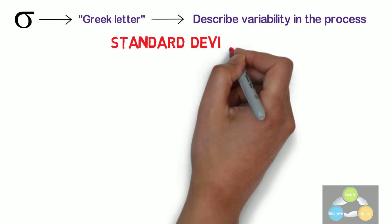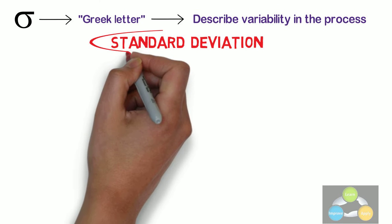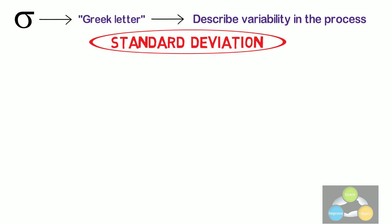Sigma is a Greek letter used to describe variability in the process. It is called standard deviation in statistical terms. Let's understand standard deviation as a concept at this stage as it is very important to understand the meaning of Six Sigma.